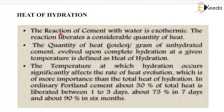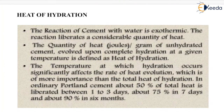The heat of hydration: the reaction of cement with water is exothermic, meaning that when water reacts with cement, a high amount of heat is liberated. The quantity of heat in joules per gram of unhydrated cement evolved upon complete hydration at a given temperature is defined as heat of hydration. The temperature at which hydration occurs significantly affects the rate of heat evolution, which is of more importance than the total heat of hydration. In ordinary Portland cement, about 50% of the total heat is liberated between 1–3 days, about 75% in 7 days, and about 90% in 6 months.